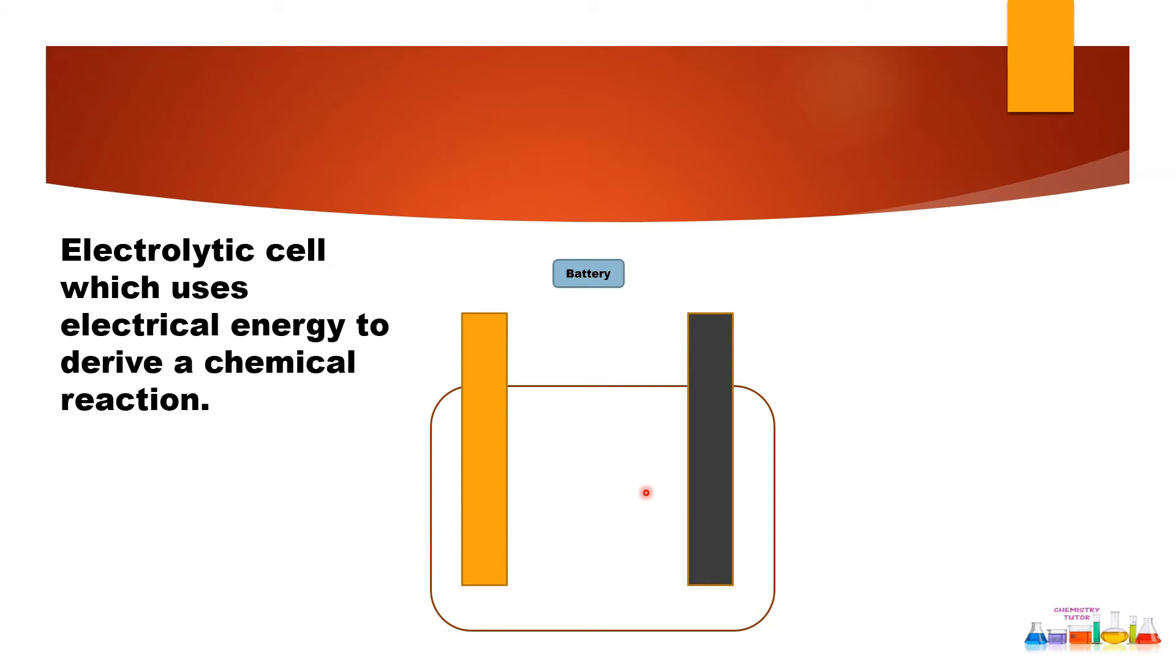These electrodes are connected with each other with the help of a battery. If we see, the positive one part is known as anode because it is attached with the positive terminal of the battery.